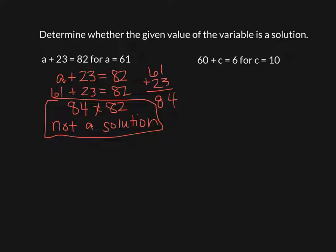So I want to see that you are plugging in the number to see if it is a solution or not. Now let's try another one. So again, I'm going to start by writing my equation down. 60 plus C equals 6 for C equals 10. So right under that C, I'm going to plug in my number. Actually, I wrote this down wrong. It's supposed to be a division sign. So I'll bring down my divided by sign and 60.